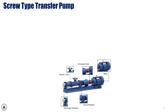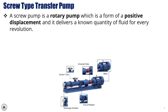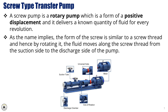Let's now take a closer look at the screw type transfer pump. A screw pump is a type of rotary pump and falls under the category of positive displacement pumps. This means it delivers a fixed, known quantity of fluid with every revolution of the screw, making it very predictable and reliable. The internal mechanism resembles a screw thread. When the screw rotates, it traps the fluid in the cavities between the threads and moves it smoothly from the suction side to the discharge side. This continuous motion helps maintain a steady, pulse-free flow, which is ideal in many transfer applications, especially when working with viscous fluids or when quiet and efficient operation is desired.